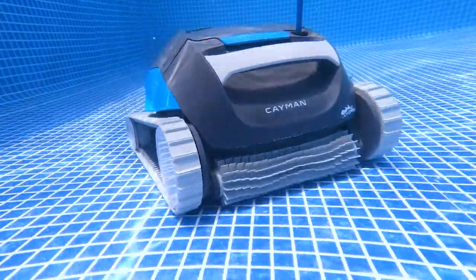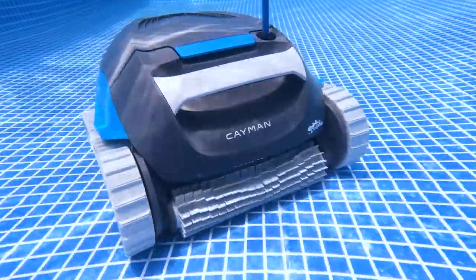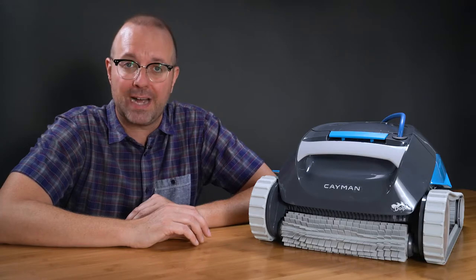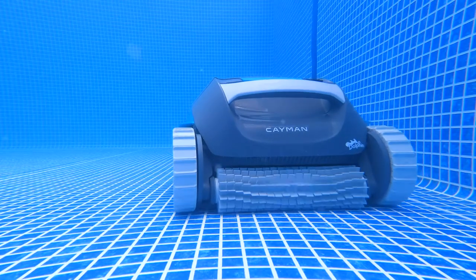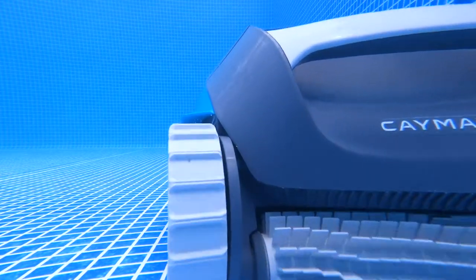The Cayman is an underrated pool cleaner that costs about $700. It has hypergrip tracks, a large filter basket, and a programmable timer. It's perfect for small to medium sized in-ground pools and even above ground pools. So if your pool is 33 feet or less, this is the review for you.